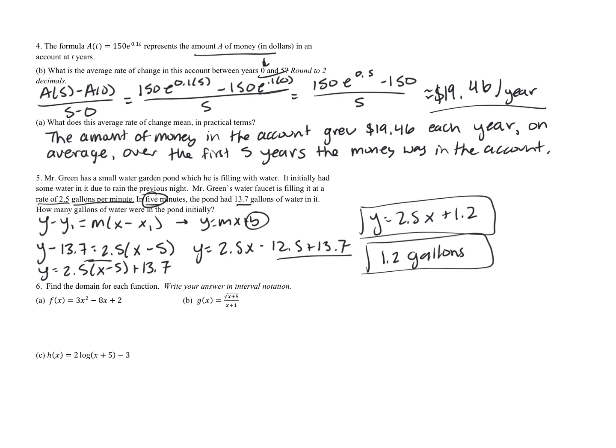Question six gives us three different functions and asks us to solve for the domain of each. Knowing the domain of base functions is helpful here: polynomials, square roots, rationals, and logs. For part A, all we have is a polynomial — a quadratic with an x-squared term and nothing else unusual. The domain for polynomials is always all reals, so in interval notation that's negative infinity to positive infinity.